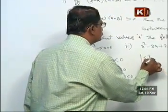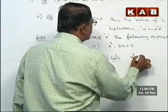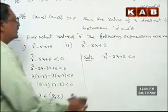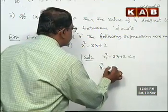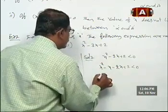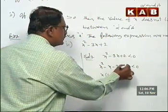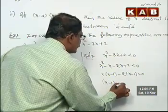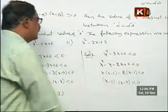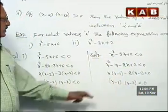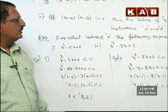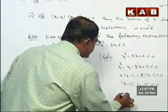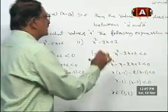Similarly, second bit: x squared minus 3x plus 2, less than 0. This can be written as x squared minus x minus 2x plus 2, less than 0. Taking x common: x(x minus 1). Taking minus 2 common in next two terms: minus 2(x minus 1), less than 0. So (x minus 1)(x minus 2) less than 0. Then the value of x lies between 1 and 2. Therefore, x belongs to (1, 2) — the given expression is negative.